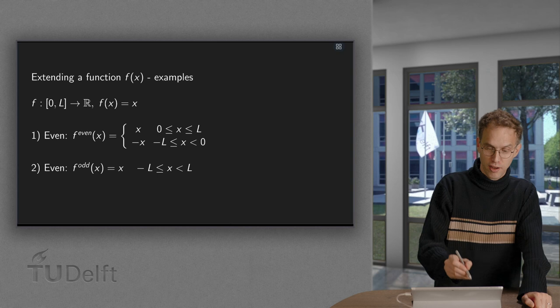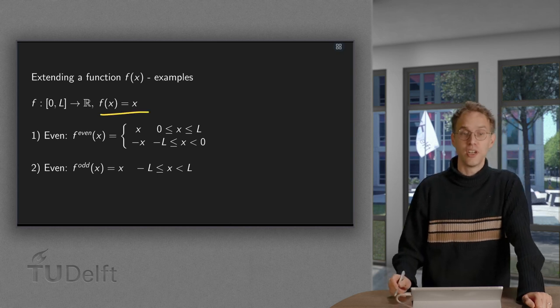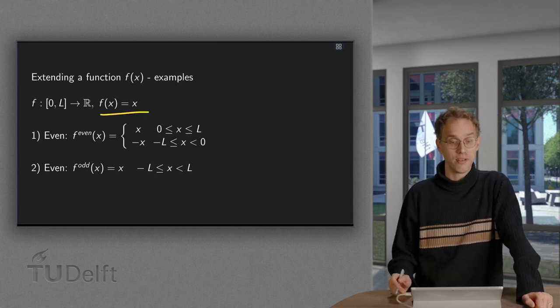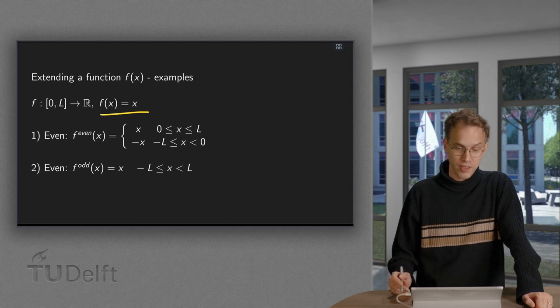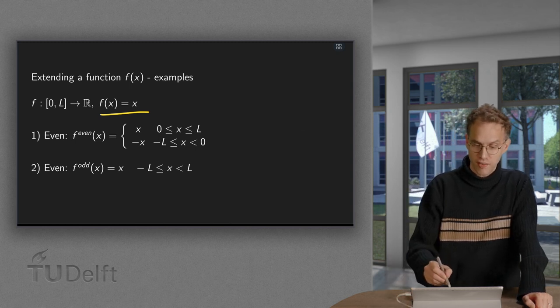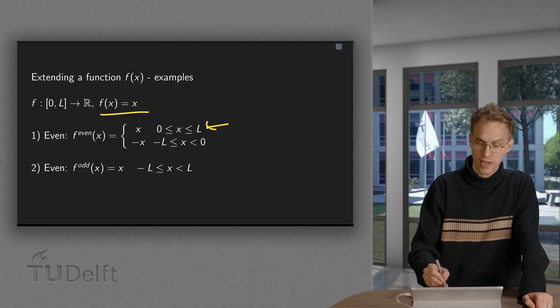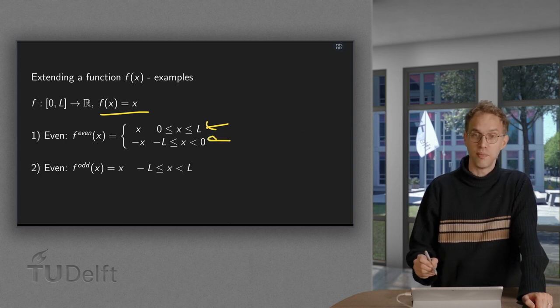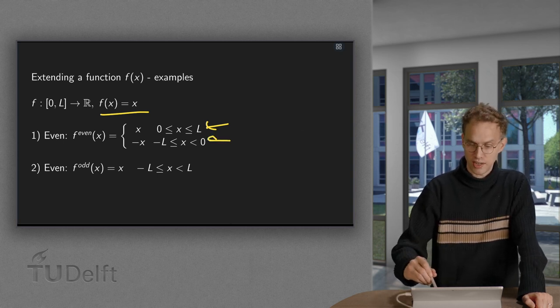So let us take our function f between 0 and l to be equal to x. Then if we make our even extension, we have x between 0 and l, and minus x between minus l and 0, so that looks like this.